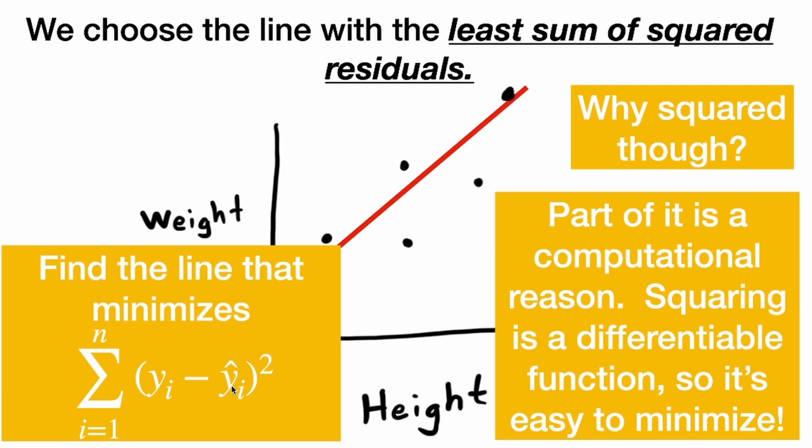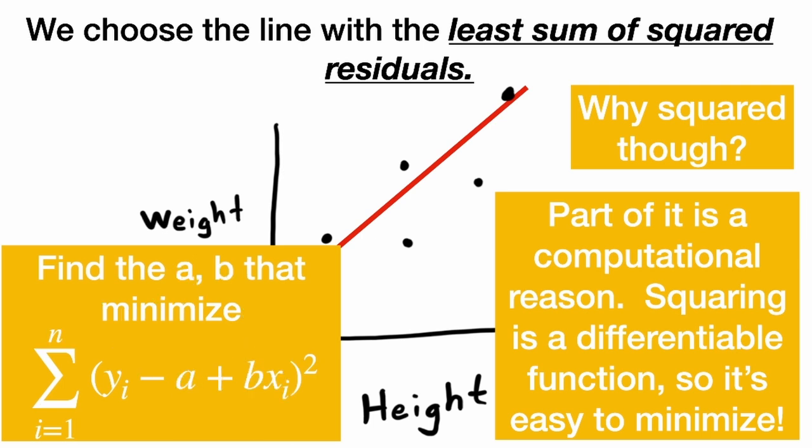And remember, what did we say our y-hat was? It's just a linear equation. So we have a linear equation. And what we're doing is we're finding the values a and b, the intercept and the slope that minimize this equation. And because we have a squared here, this is differentiable and it's very easy to solve.